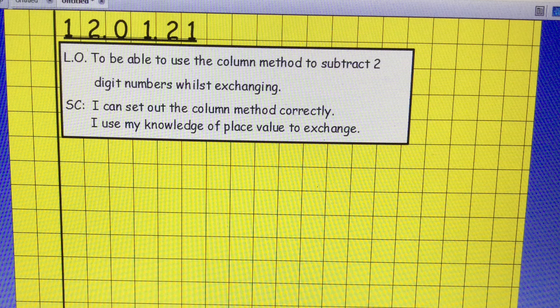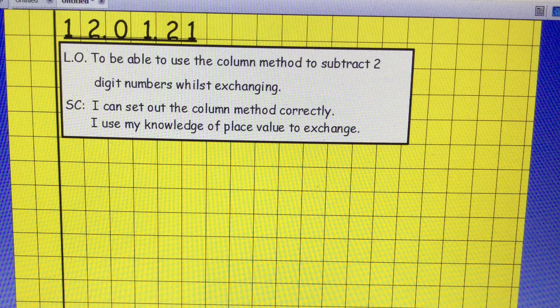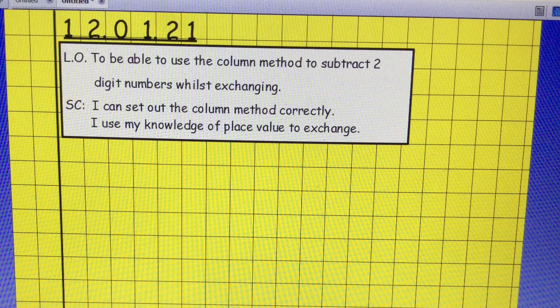Our learning objective today is to be able to use the column method to subtract two digit numbers whilst exchanging. And to be successful, we need to be able to set out the column method correctly and use our knowledge of place value to help us with exchanging.